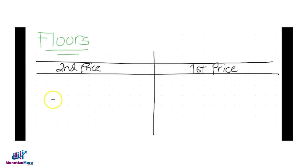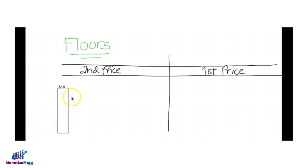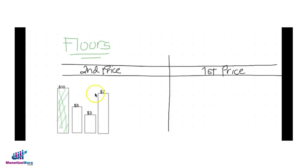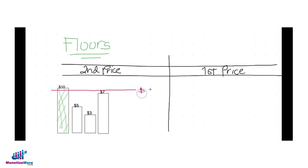Now let's talk about CPM floors and their role in determining the bid price in first price versus second price auction. In the second price auction, let's say Ad Exchange wins and the highest bid is $10, with other bids at $7, $5, and $3. The bidder would normally pay $7. But if you have a CPM floor set to $9, the advertiser pays $9 instead of $7.